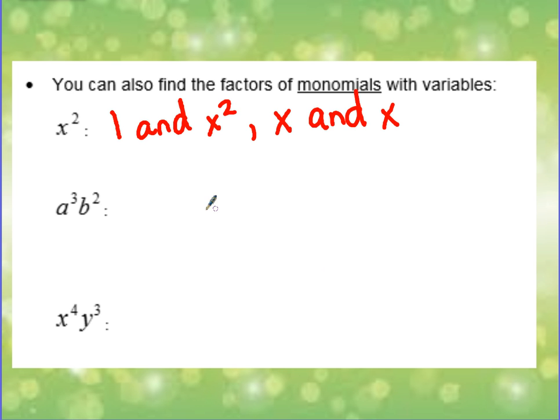Let's try a to the third, b to the second power. We will continue starting with 1 and a to the third, b to the second. We can also do, for example, if I just take the letter a and multiply that, well then I would need to multiply by a squared and b squared. So give me back a to the third, b squared.